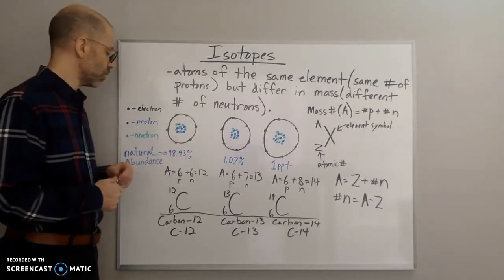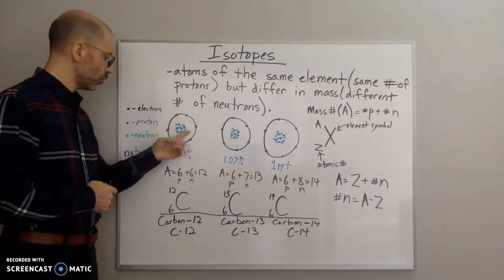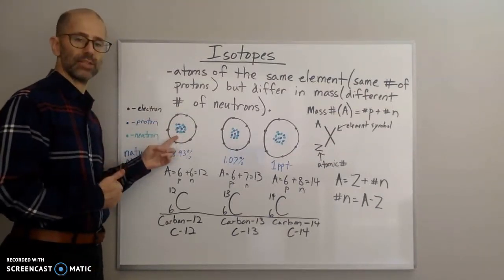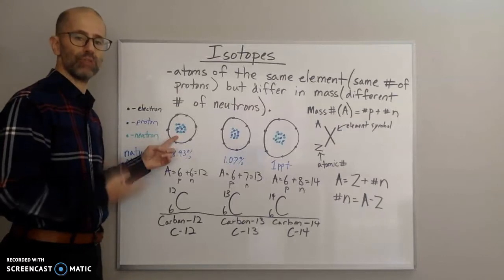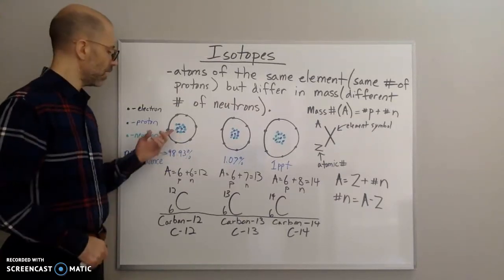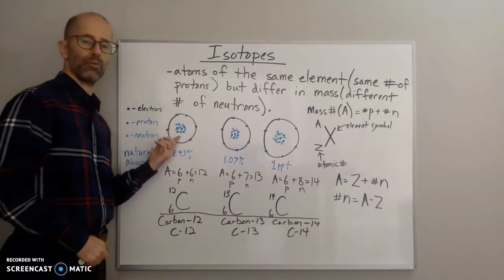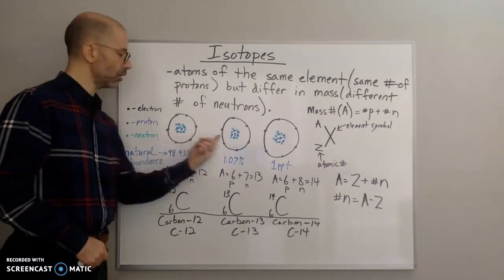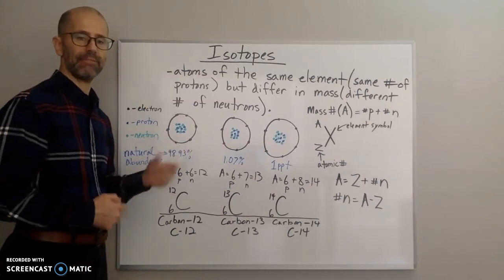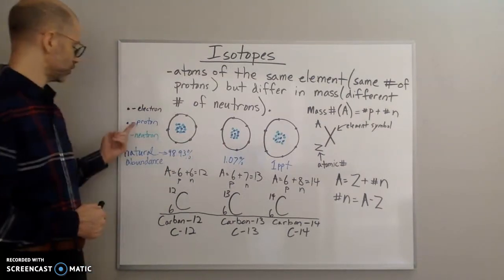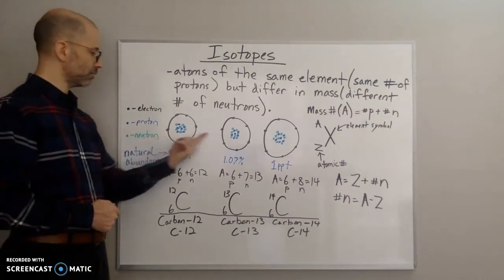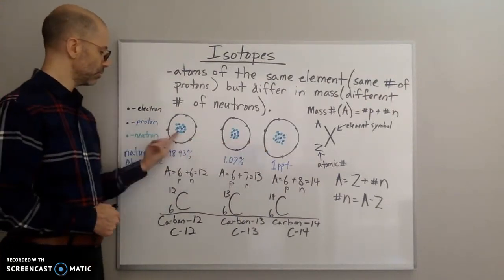98–99% of the mass of an atom depends on the nucleus — your protons and neutrons. So the mass depends on protons and neutrons, and if the neutrons change then the mass changes. If all three of these atoms are the same element, they have to have the same number of protons, shown here in blue.